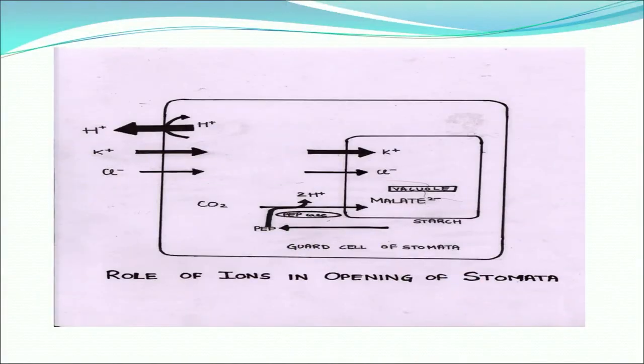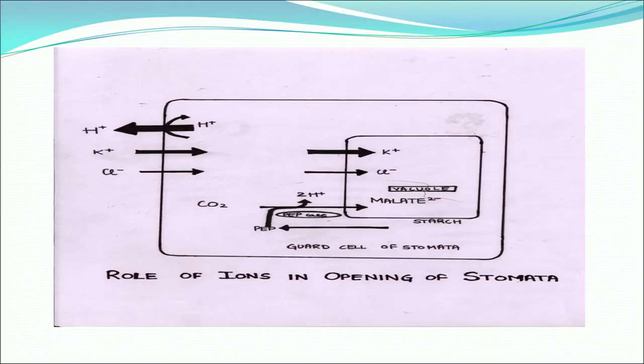Here is an illustration showing the role of ions in opening of stomata. I am going to discuss the roles of some ions which are very important during the closing and opening of stomata. In this illustration you can see that potassium ions, chloride ions, and malate ions lower the water potential, hence endosmosis takes place.